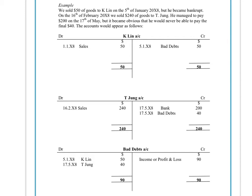With Kaylin, the original double entry would have been to credit the sales and debit the debtor account, Kaylin. When he becomes a bad debt, to cancel this out and make it a dead account, we would credit the Kaylin account and debit our bad debts account. So that $50 will now be shown as part of a bad debts entry in the profit and loss account.